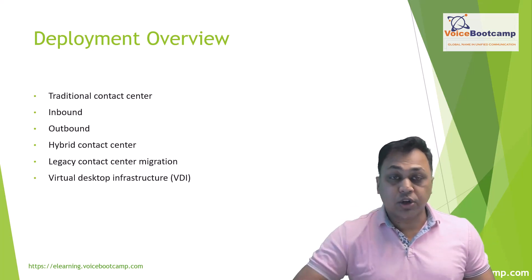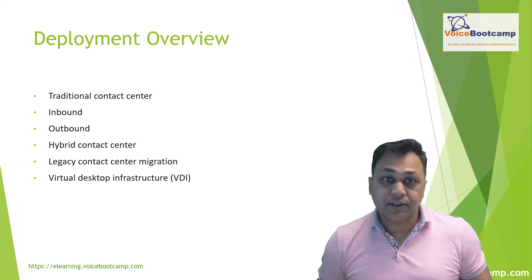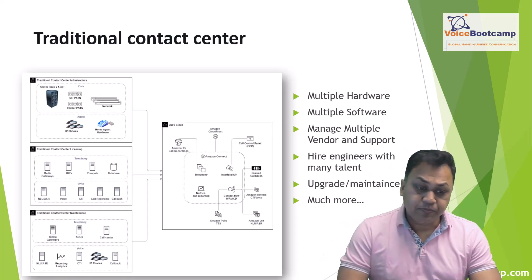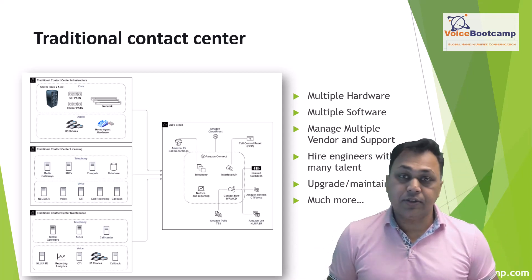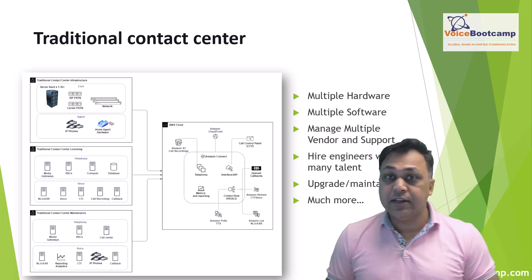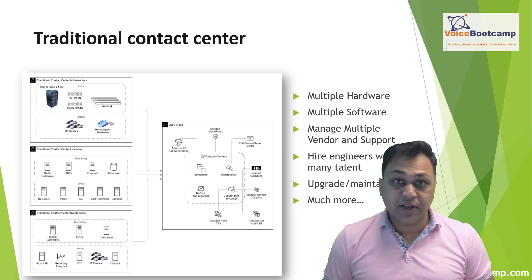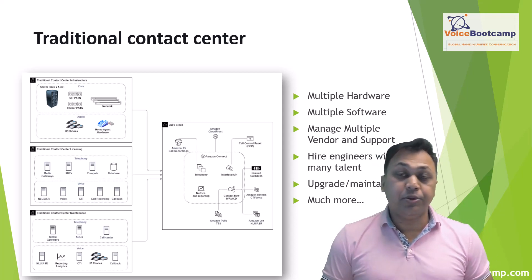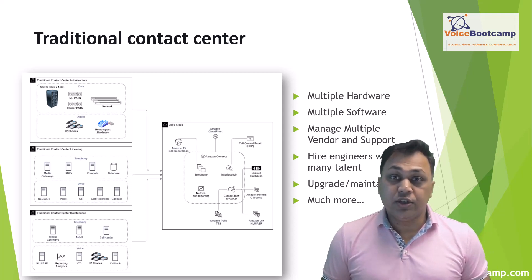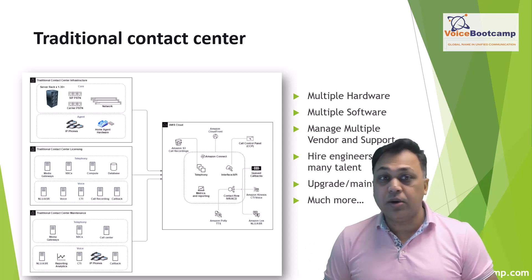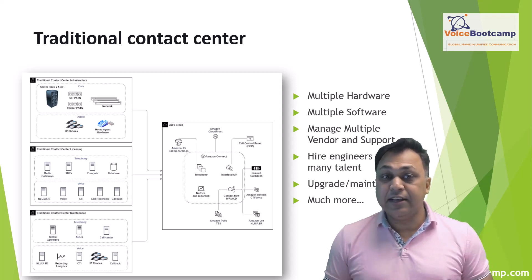We're going to look at things like working with a traditional contact center, inbound contact center, outbound contact center, hybrid contact center, legacy-based contact center, as well as virtual desktop infrastructure. A typical traditional contact center usually requires significant technology in place — IP telephony, a media environment, networking, and computing infrastructure such as servers — all with a hardware footprint spanning multiple vendors and different data center locations.